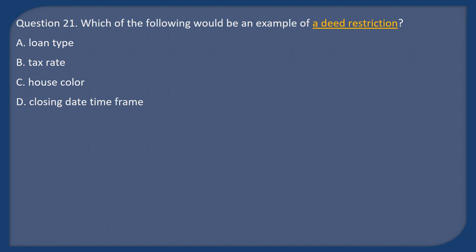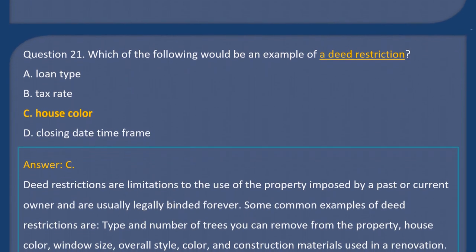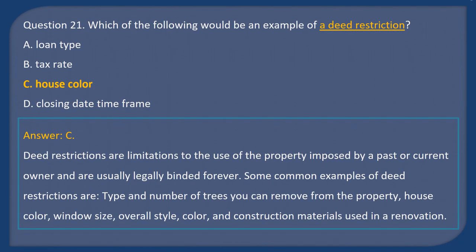Question 21: Which of the following would be an example of a deed restriction? A) Loan type, B) Tax rate, C) House color, D) Closing date time frame. Answer: C. Deed restrictions are limitations to the use of property imposed by a past or current owner and are usually legally binding forever. Common examples include type and number of trees you can remove, house color, window signs, and overall style, color, and construction materials used in renovation.